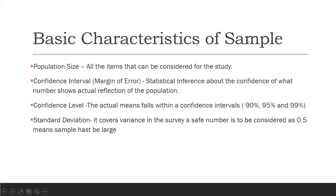Next we come to the basic characteristics of sample. Number one is population size — all the items that can be considered for the study. Number two is confidence interval, which we can also call margin of error — the statistical inference about how confident we are that the number reflects the actual population. Number three is confidence level — the most popular falling in three categories: 90%, 95%, and 99%. Number four is standard deviation, which covers the variance in the survey; a safe number to consider is 0.5, meaning the sample has to be large.